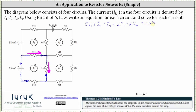When the direction of the current and the volts are in the same direction, we use positive volts. If they're in the opposite direction, we use negative volts. Simplifying by combining like terms: five I sub one plus I sub one plus two I sub one is eight I sub one, minus two I sub two, minus I sub four equals negative 23. Here's the simplified equation for circuit one.